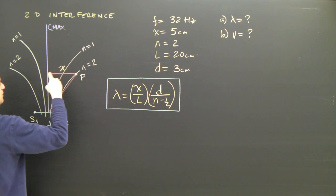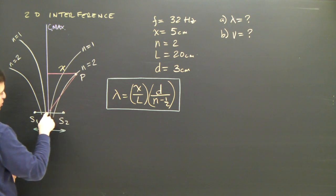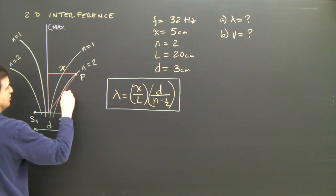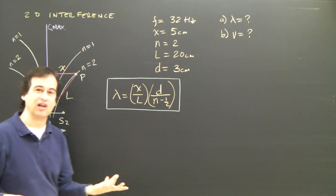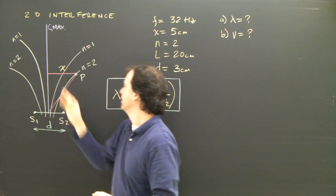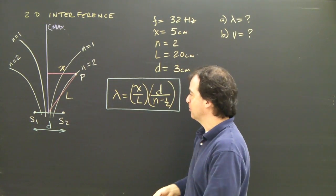We call this distance X, and we call the distance from here to here L. So I've created a triangle, and if you look online or in a textbook, you'll find out why this turns into this formula. But basically,